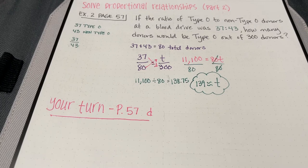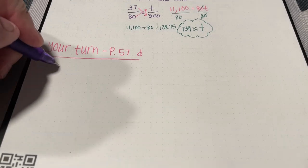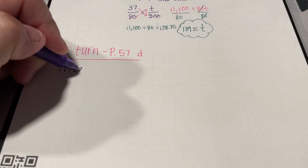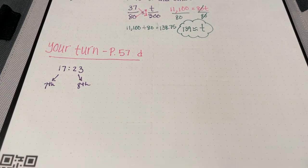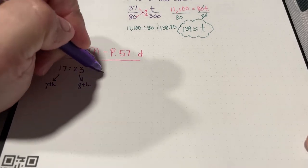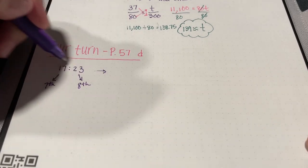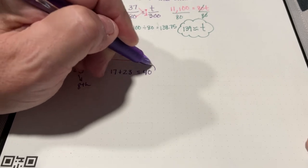Now try page 57 problem D. The ratio of 7th grade to 8th grade students in a soccer league is 17 to 23. We want to find how many are 7th graders if there are 200 students total. First, 17 plus 23 gives us 40 total students based on this ratio.